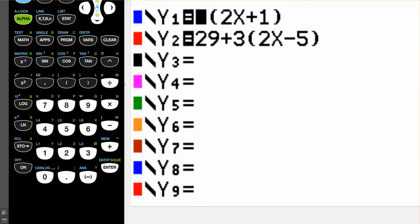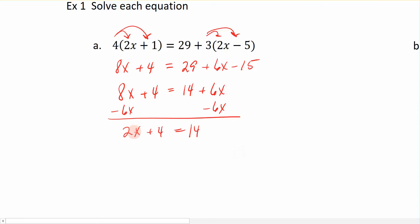Now that I've got my variable on the left-hand side, I'm going to subtract 4 to the right, giving me 2x is equal to 10. Now remember, we're going to divide by the coefficient of my variable. So I'm going to divide both sides by 2, and I find out that x is equal to 5.